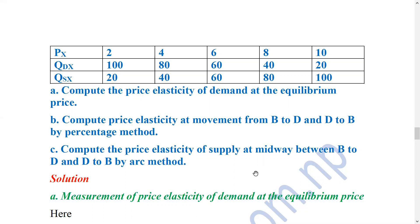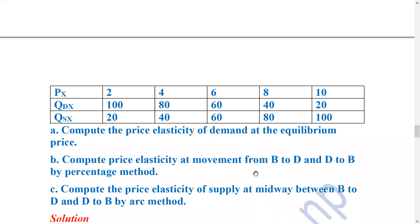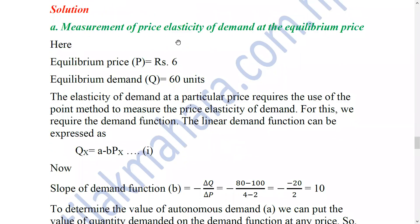Sub-question B: compute price elasticity of demand for movement from B to D and D to B by percentage method. Sub-question C: compute price elasticity of supply at midway between B to D and D to B by arc method. For question A, we find equilibrium where demand equals supply: at Rs. 6, quantity demanded equals quantity supplied at 60 units. So Rs. 6 is the equilibrium price.